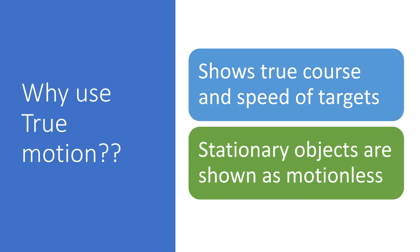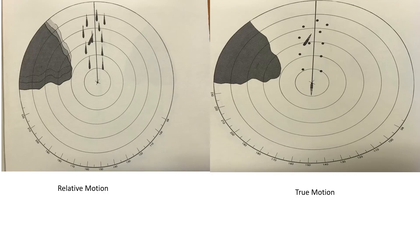Now let's compare the relative motion picture with the true motion picture. In the relative motion display, the point of land and the channel markers move towards your ship's position, which is fixed in the center of the scope. It will be the other things that will be moving; you will be stationary.